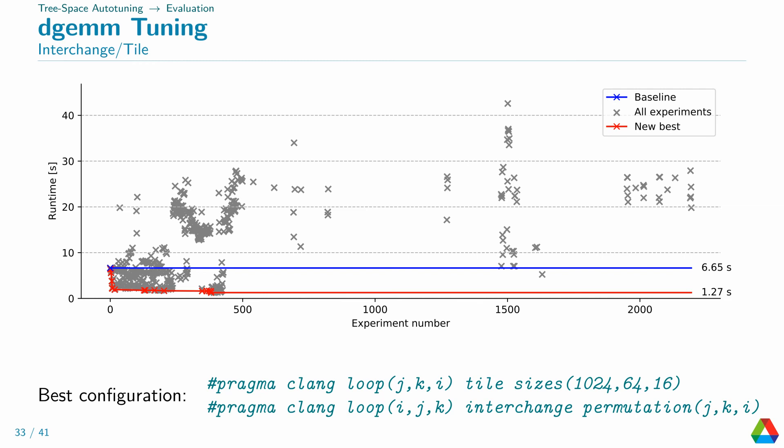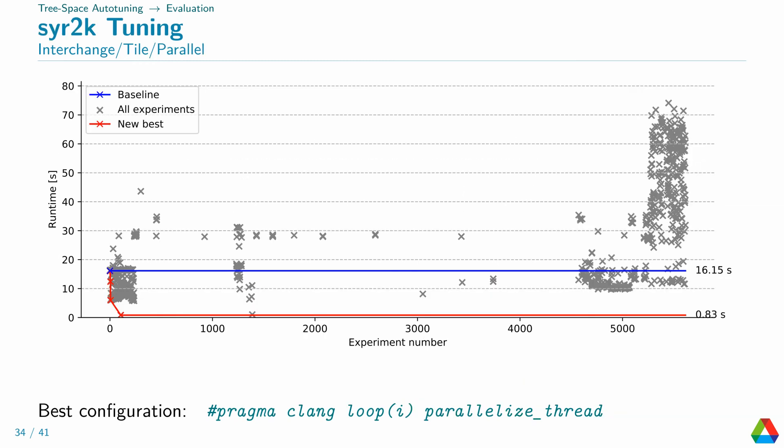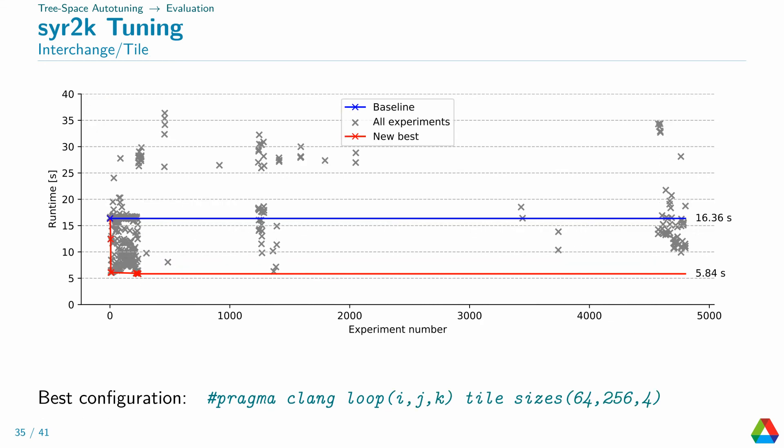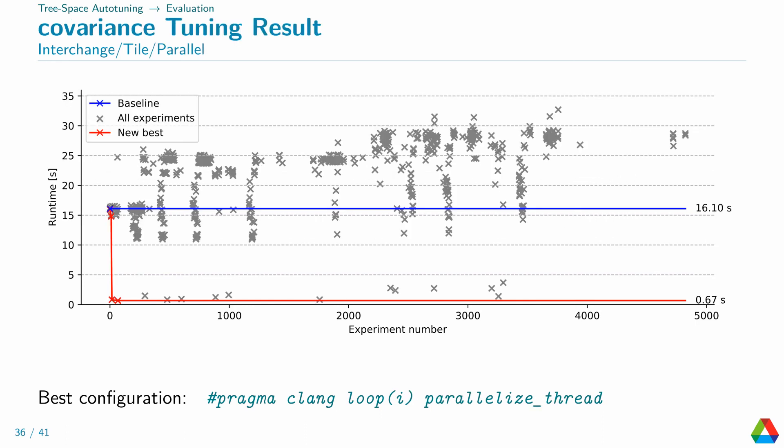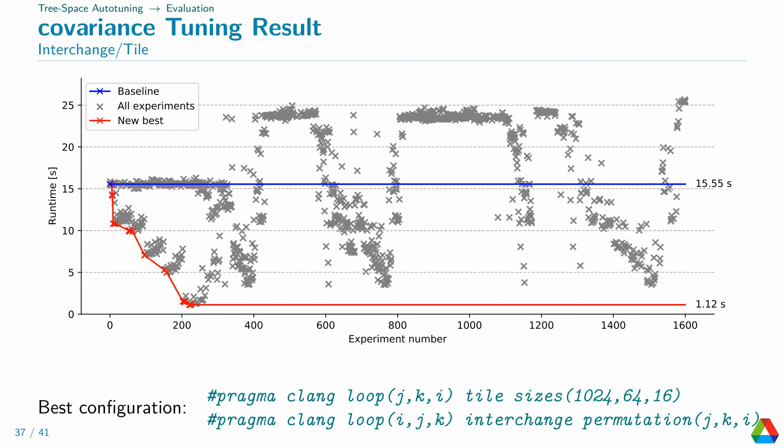Here is the result for SUR2K. It is the same phenomenon. It quickly finds the parallelization of the outermost loop and does not improve beyond that. Without parallelization, unlike DGEMM and covariance, it does not consider interchange to be necessary. Same boring result for covariance. Only the outermost loop is parallelized again. We again get a more interesting result without parallelization. Note that it is only about twice as slow as the parallel version.